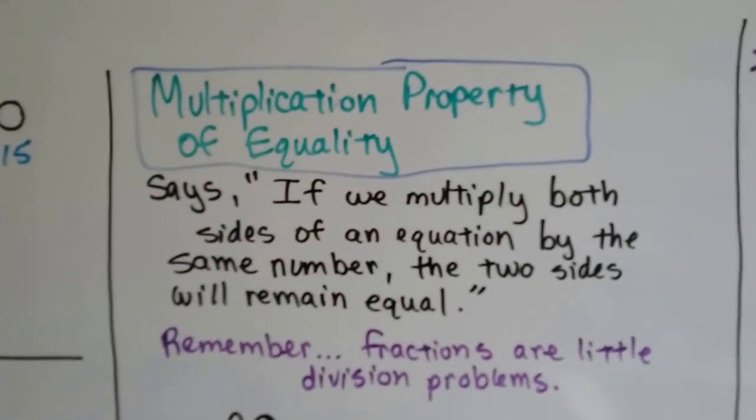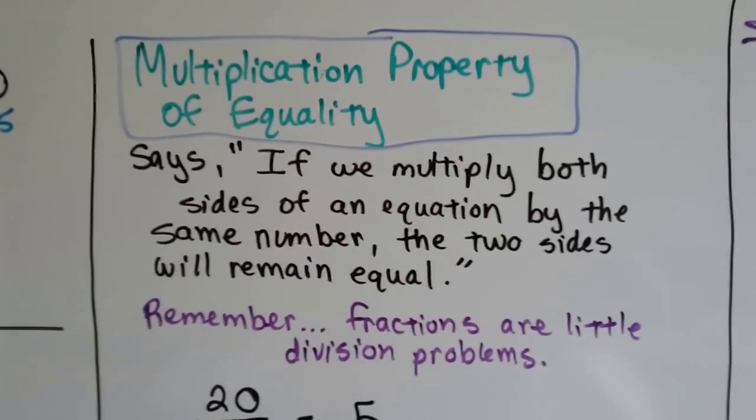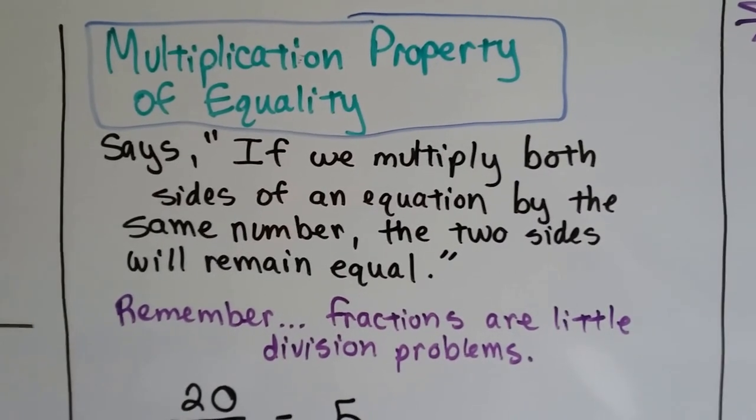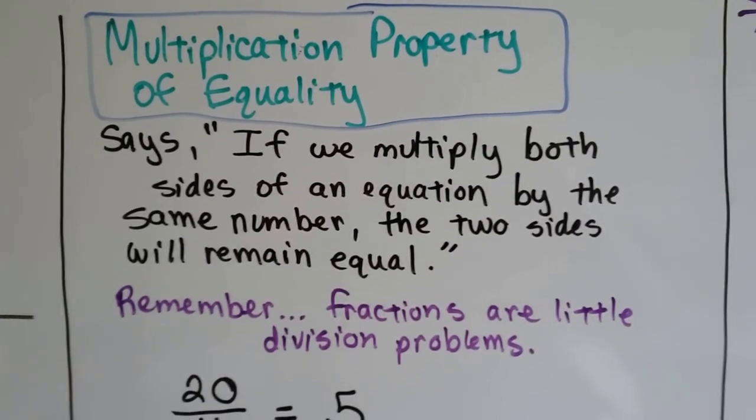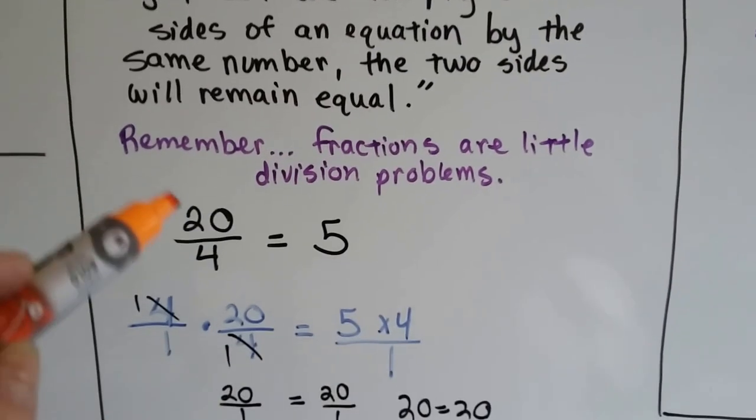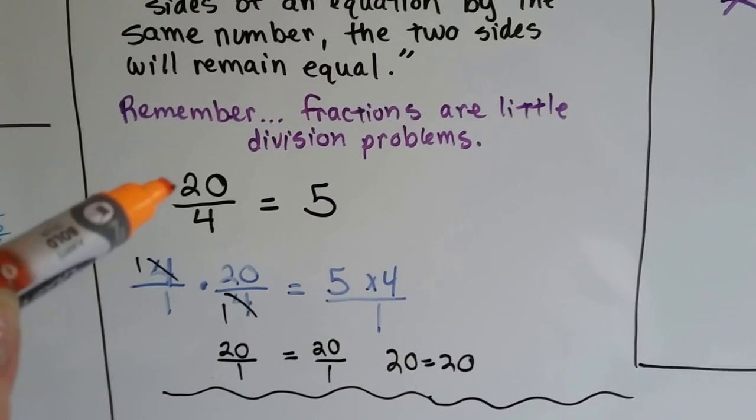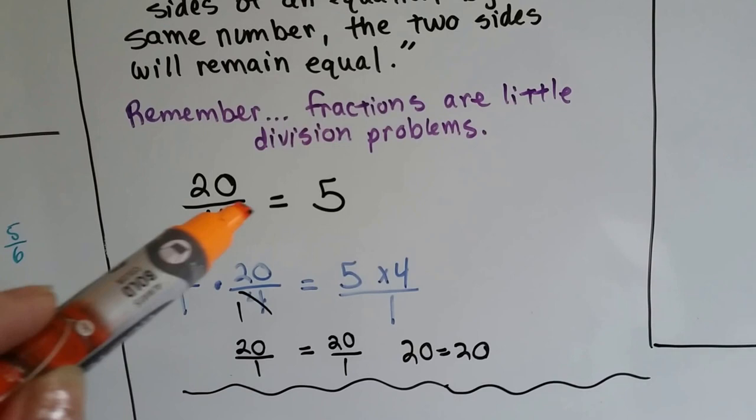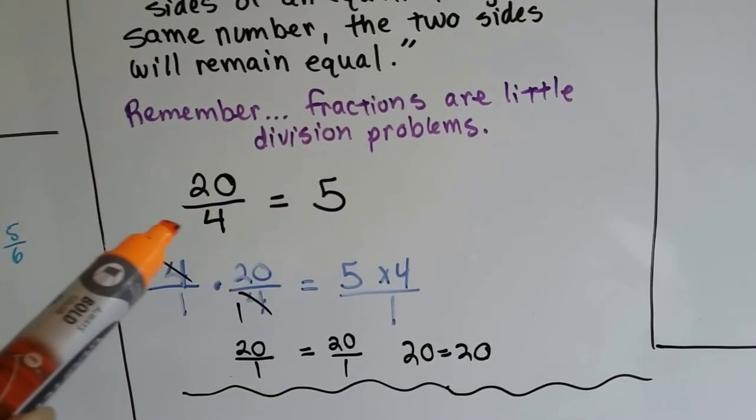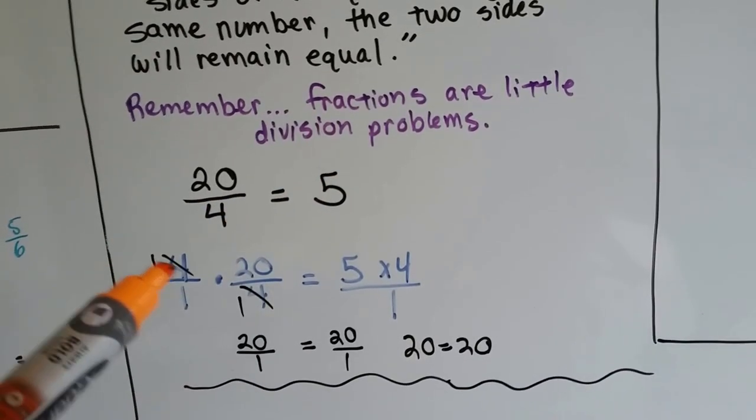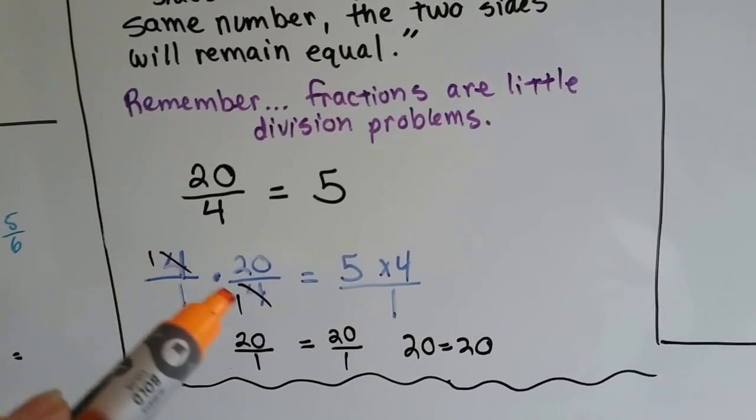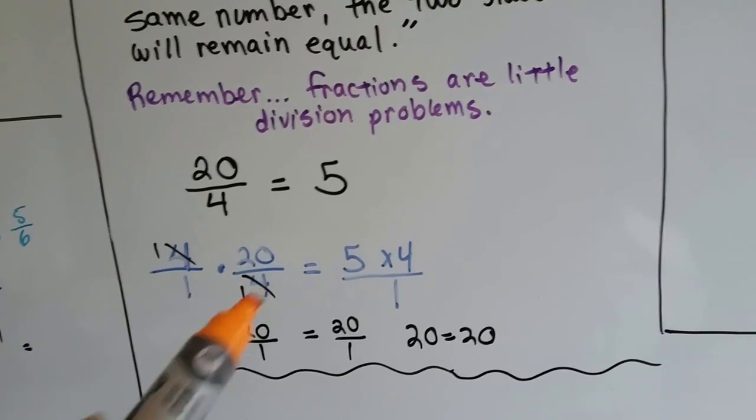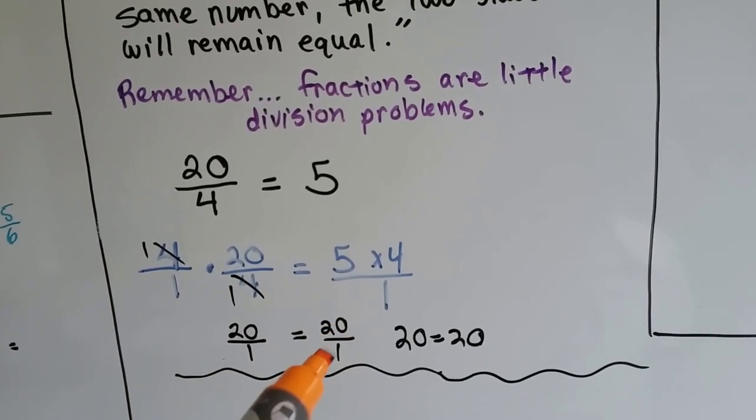Then we've got the multiplication property of equality and it says if we multiply both sides of an equation by the same number, the two sides will remain equal. So we can cancel out with multiplication. Remember, fractions are little division problems. So this is if one of the numbers like the 20 was the variable. If we've got 20 over 4 equals 5, we can multiply both sides by 4 and this 4 will cancel out that 4 and we'll end up with 1 times 20 over 1. 20 over 1 is equal to 20 over 1.